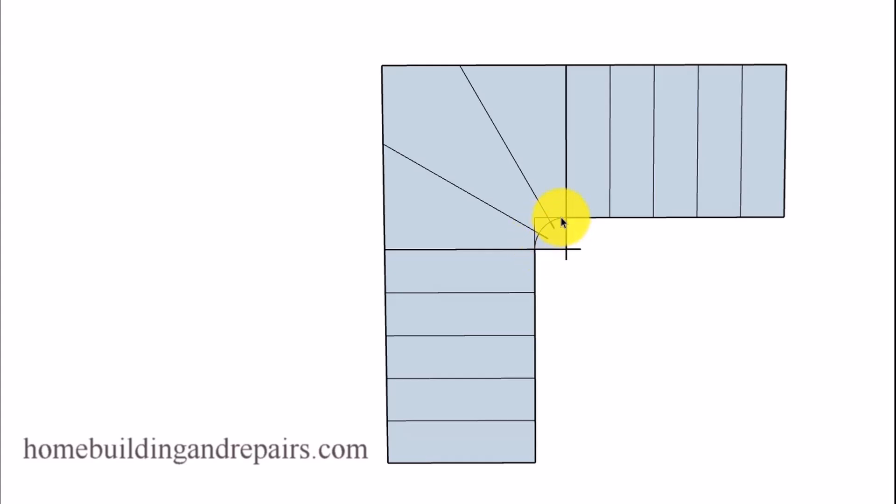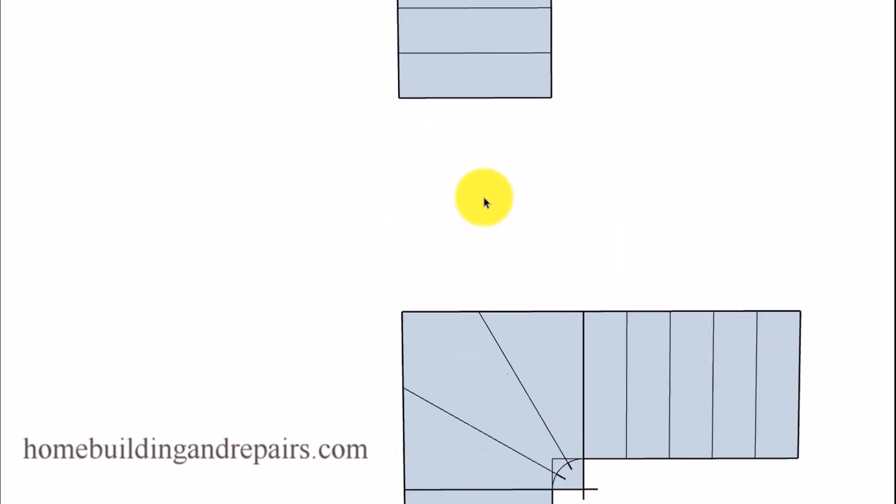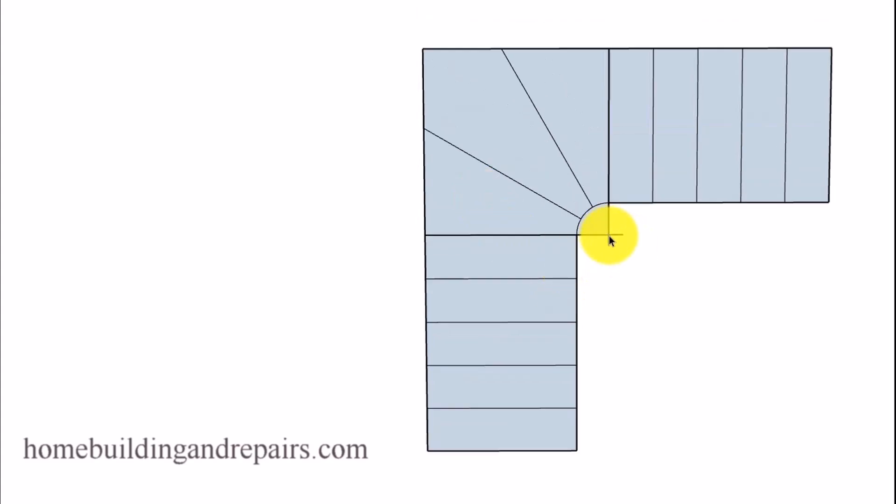But here it is, we've got a little curve on the inside. And the curve is coming from here. This would be the center point. And then we draw our circle. As long as this meets the minimum building code requirements for your area, you would be able to do something like this.